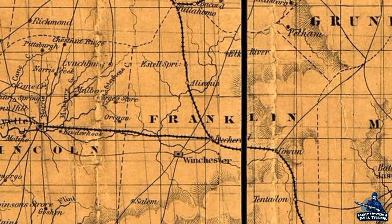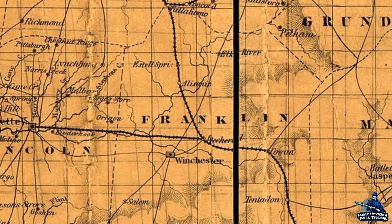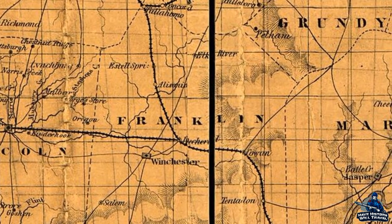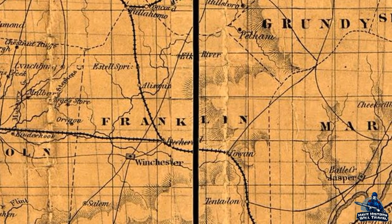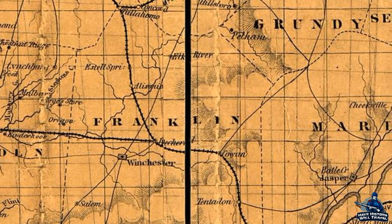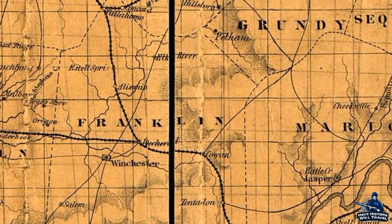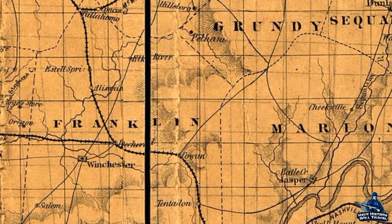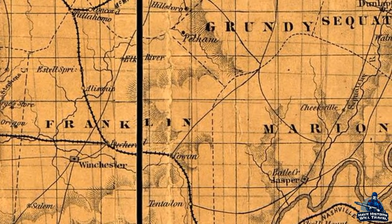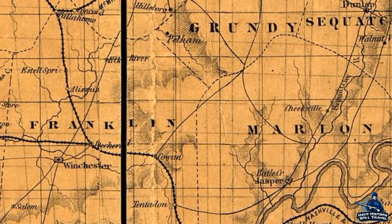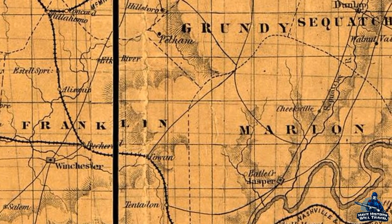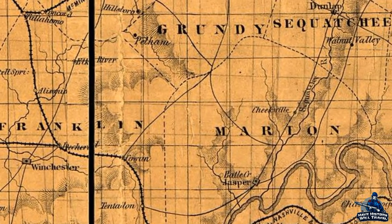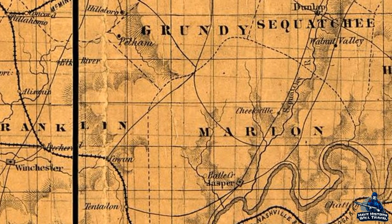Buell and Thomas moved toward Chattanooga, and by July, the Army of the Ohio was in northern Alabama, with Thomas's men occupying Tuscumbia. While there, politicians and military leaders began to criticize the slowness and timidness of Buell, and Thomas's name came up to replace Buell. The military governor of Tennessee, Andrew Johnson, pushed for Thomas to be given a command to invade East Tennessee.